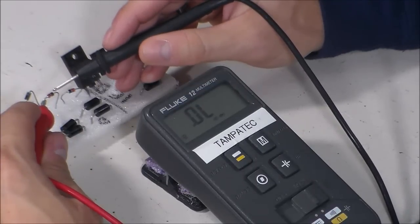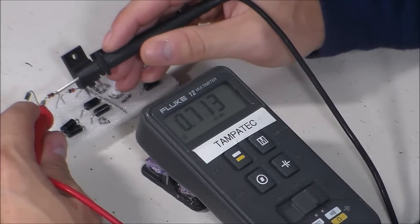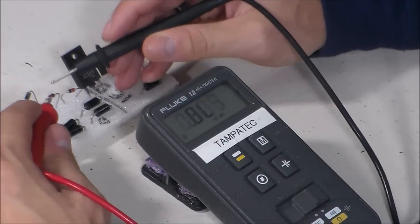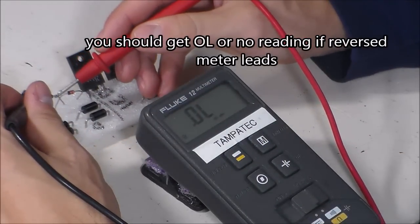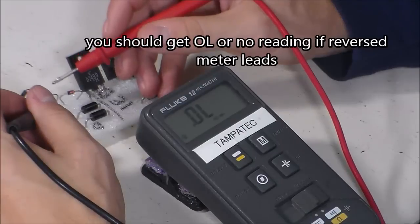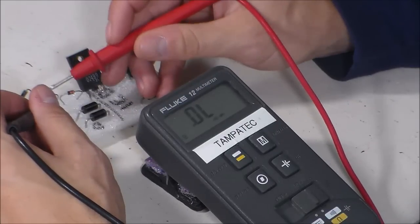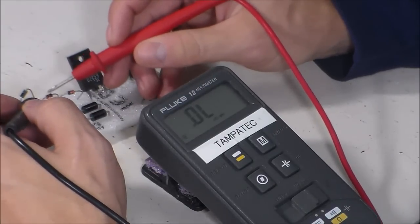Here's another diode and I put my black lead on the stripe side, which is the negative side of the diode. And I'm reading 0.7, that's good. And then reverse my meter leads and I'm getting nothing, no reading. So it's allowing voltage in one way and blocking it the other. It's doing its job so that's a good diode.